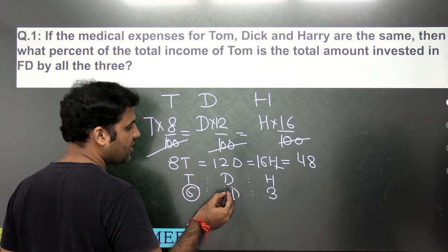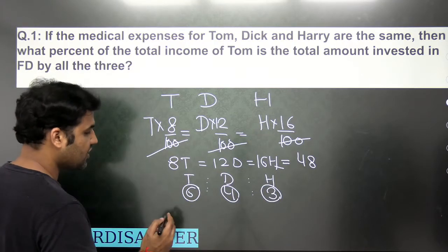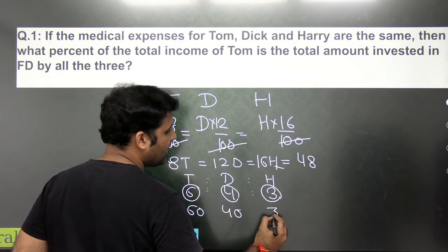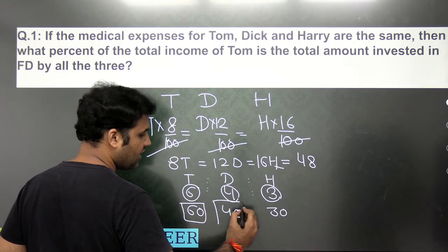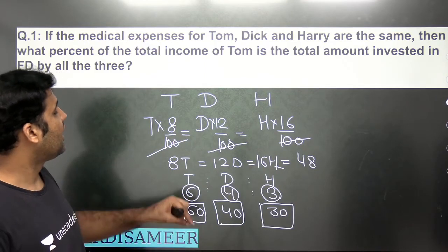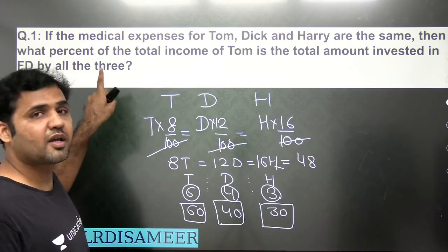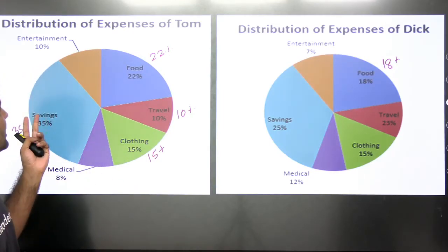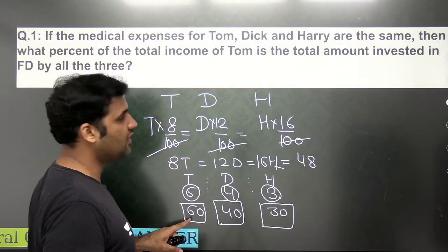To further simplify our calculations, let's assume Tom earns 60 rupees, Dick earns 40 rupees, and Harry earns 30 rupees — scaled up by a factor of 10. Now we can find the total amount invested by all three in FD. Tom's income is 60, and his saving rate is 35%, so 35% of 60 needs to be calculated.